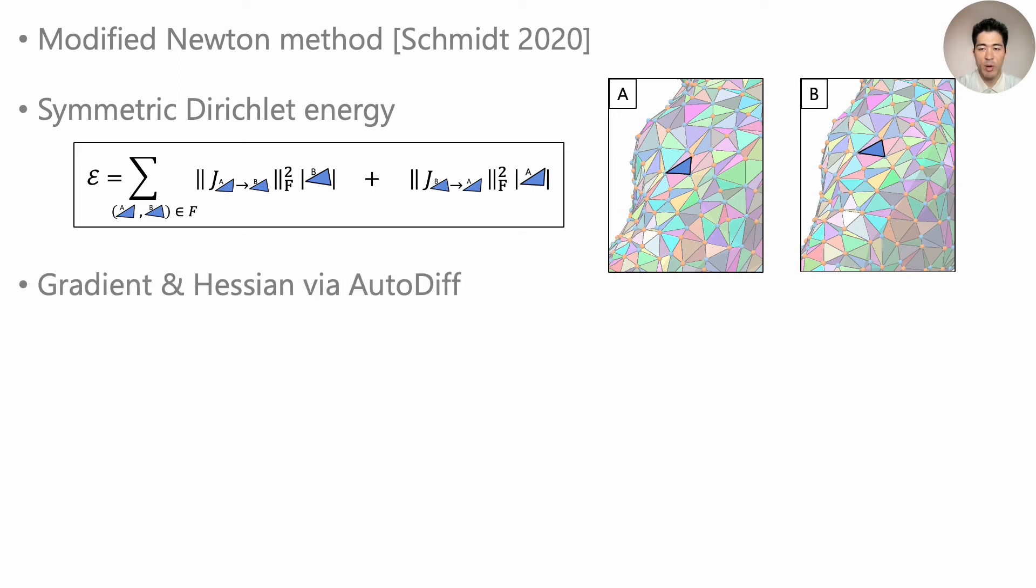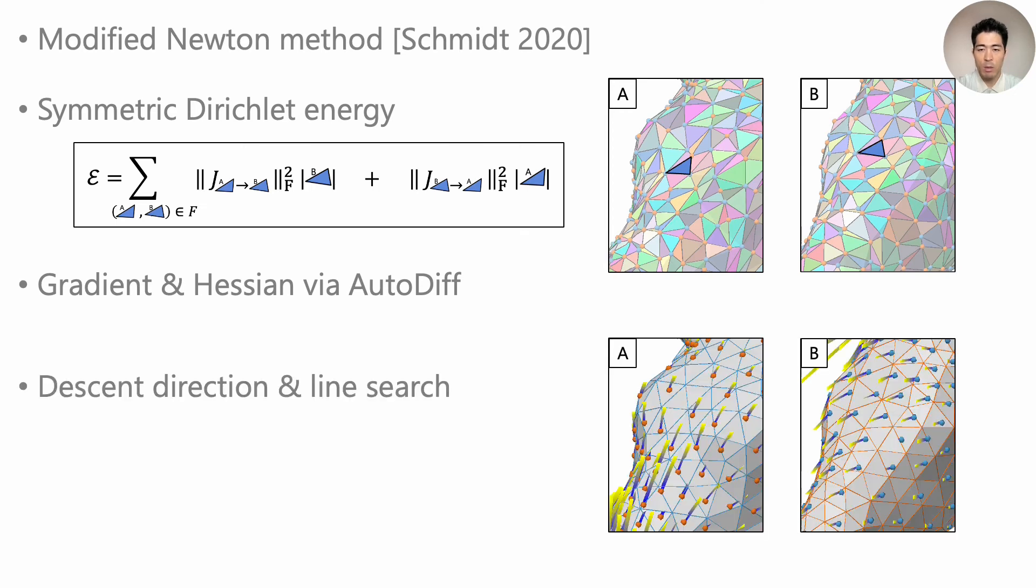We compute the energy's gradient and Hessian using automatic differentiation. We then solve for the descent direction followed by a line search. At every search step, we generate a CIT with the new vertex images.